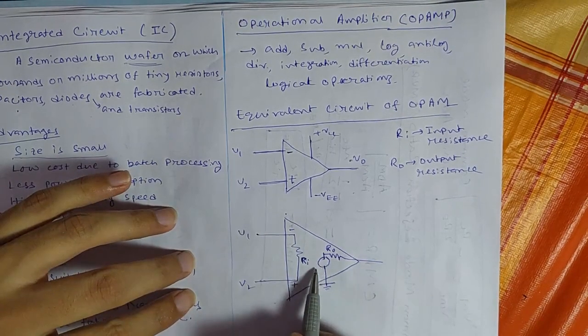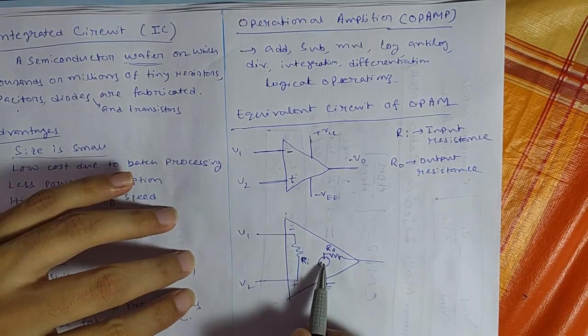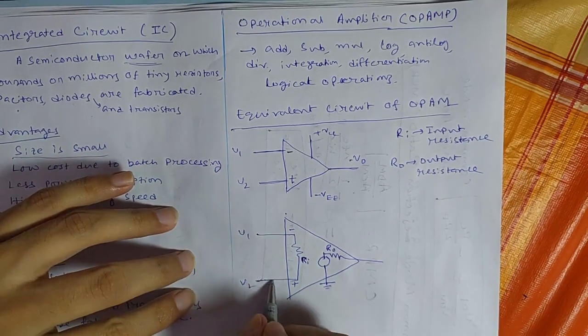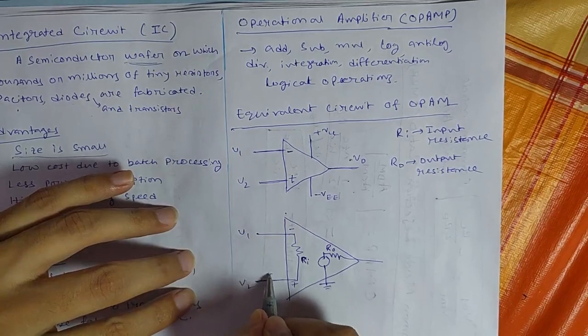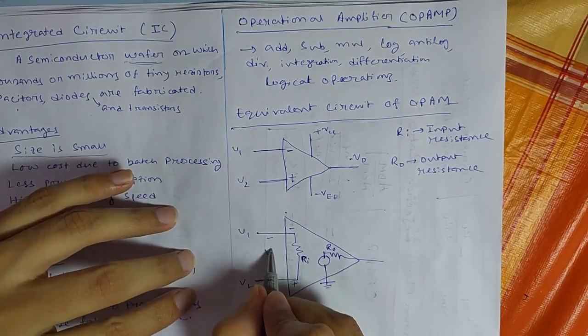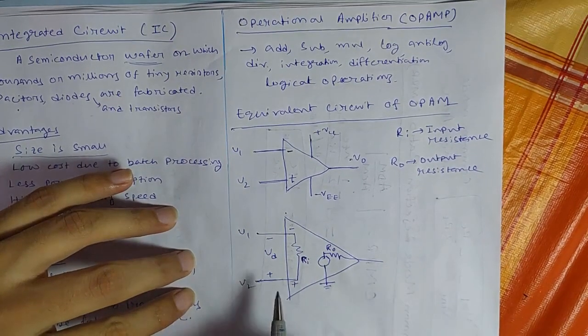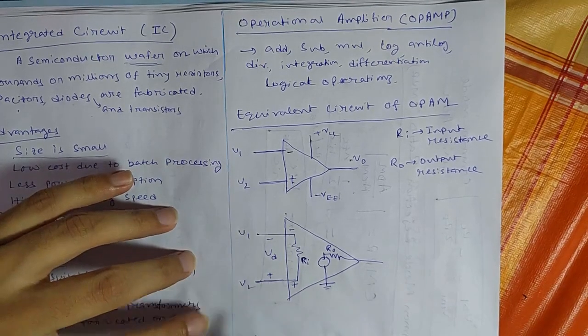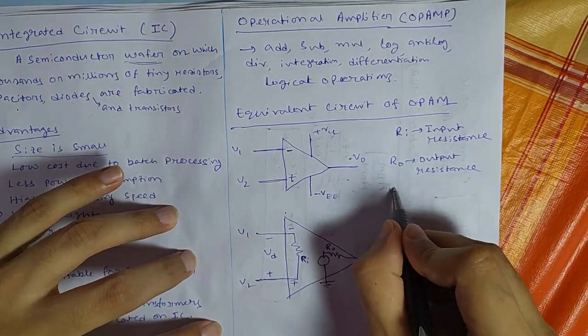Now this dependent source depends on the input difference signal. So if this difference of these two signals, input signals VD, remember, see here that we are taking VD plus and minus. So that is VD will be the difference signal.